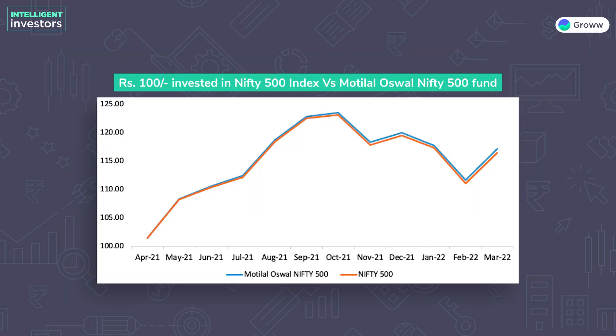One example of a broad market index fund is the Motilal Oswal Nifty 500 Fund. As the name suggests, this fund tracks Nifty 500. The total expense ratio is 0.39%, which is very low. The stocks in this fund span large cap, mid cap, small cap, and even micro cap categories. Looking at this fund's performance against its benchmark, it closely mirrors the Nifty 500. These funds are excellent for long-term investors who want broad market participation at low cost and high tax efficiency.